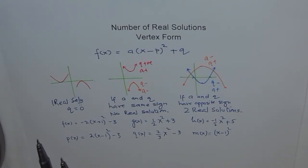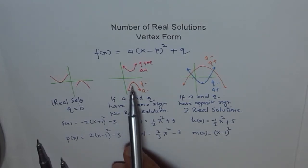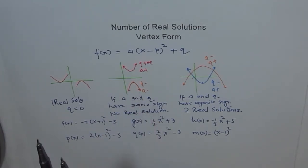First one. A is negative and q is negative. Both are negative. Same sign. That means what? q negative means you are here. Negative 3. And then open downwards. How many solutions? Zero.